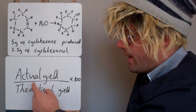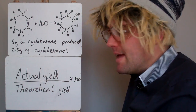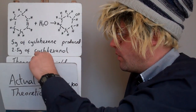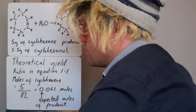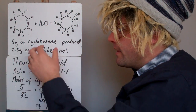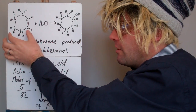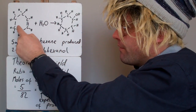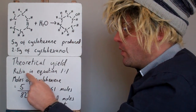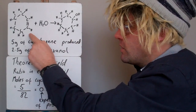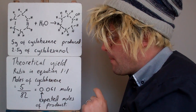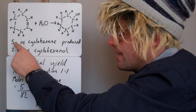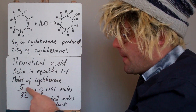The first step to work out the theoretical yield is to convert your masses into moles. We've got to look at the equation and see what the ratio of the starting material to the product is. There's only one product here — for every one of these we produce one of these. The ratio in the equation is 1 to 1 for starting material to product. So what we want to do first is turn that mass into moles — we take the mass, 5g, and divide it by the molar mass of cyclohexene.